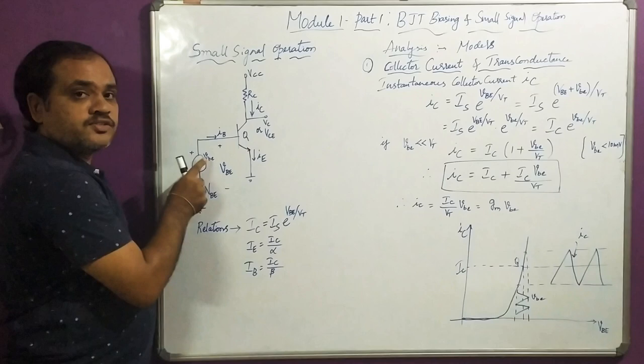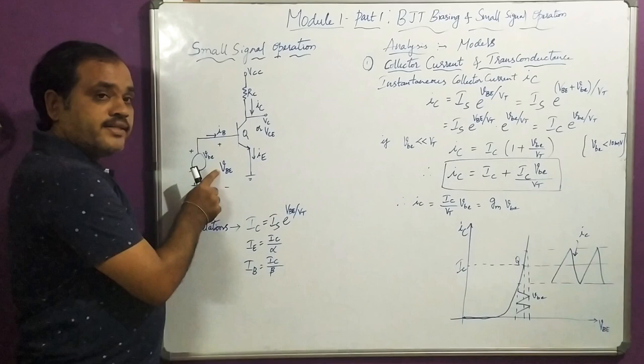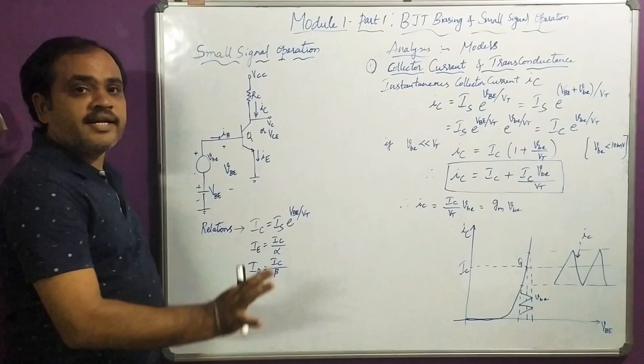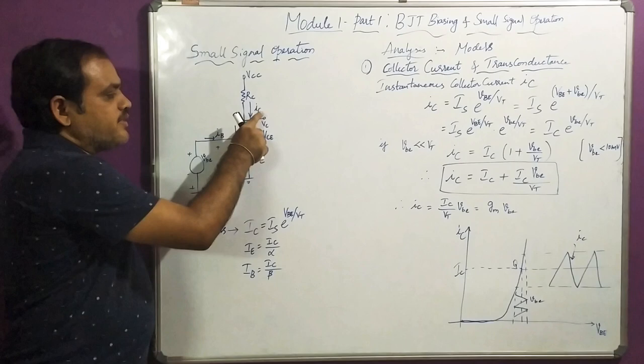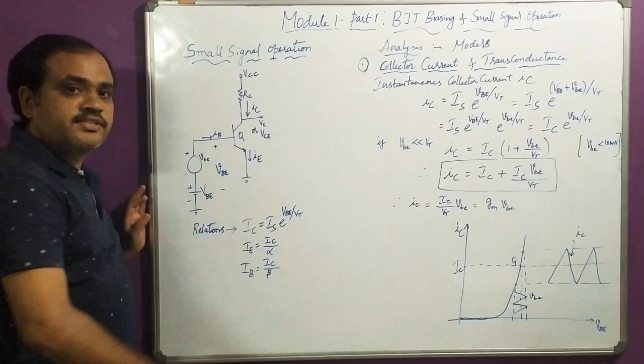If I write the voltage or current with a small letter and the suffix in capital letters, it is called instantaneous voltage or current. For example: small i, capital C; small i, capital B; small i, capital E — these three are called instantaneous currents. And small v, capital VBE is called instantaneous voltage.